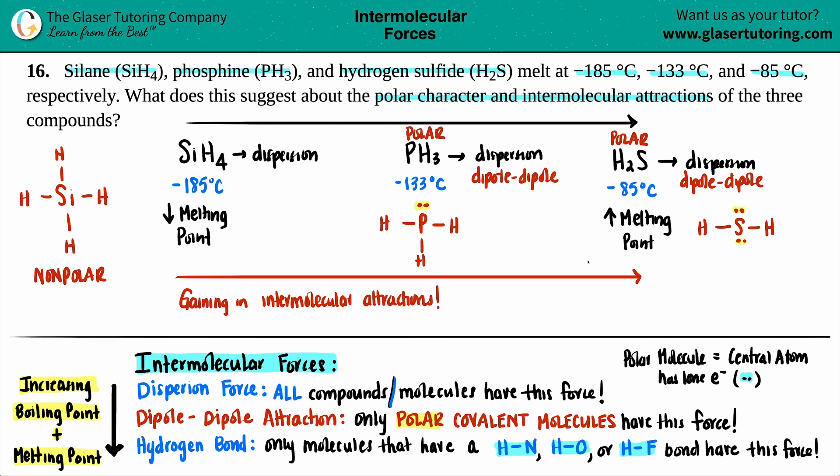Just know that the more polar you are, the more lone pairs, the higher the melting point as well. Since PH3 only has one lone pair of electrons, it is less polar. Even though it's classified as a polar molecule, it is less polar. But since your sulfur compound has two lone pairs, on the scale of polarity, this would be more polar.